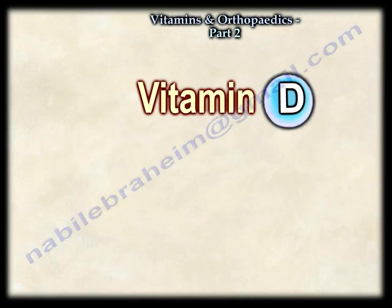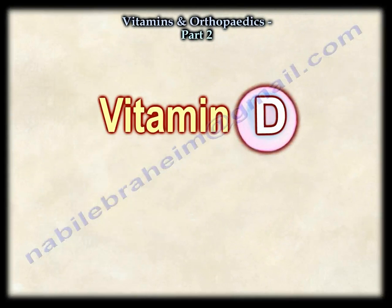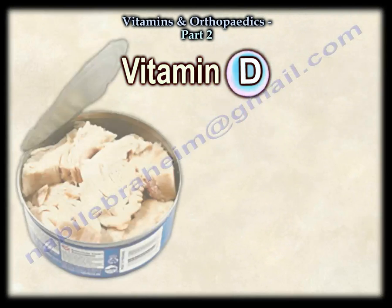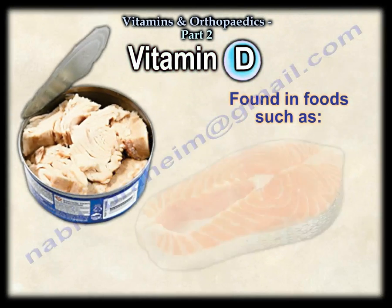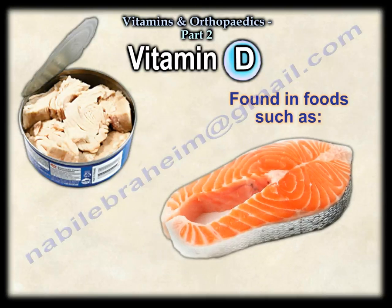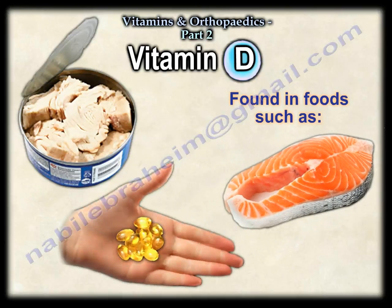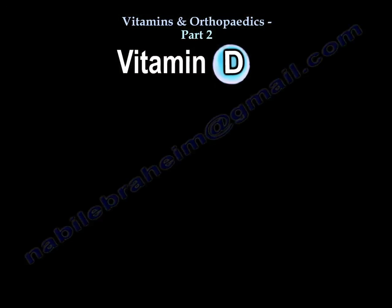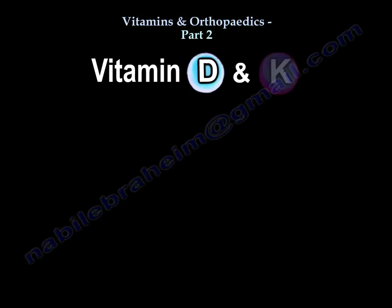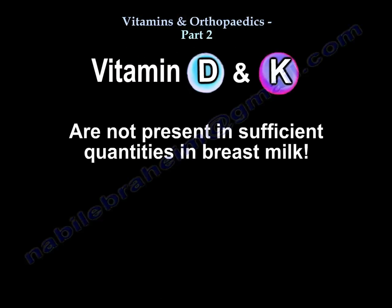Vitamin D is naturally found in tuna, salmon, and cod liver oil. Vitamin D and K are not present in sufficient quantities in breast milk.